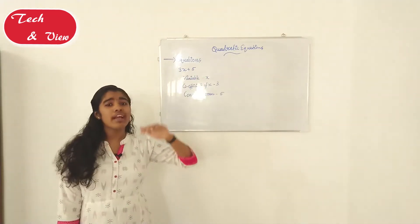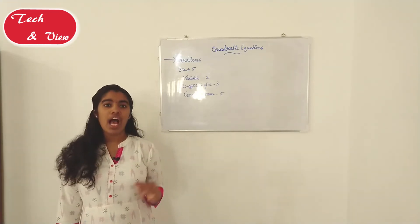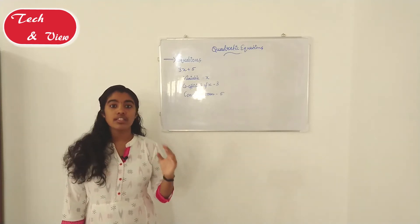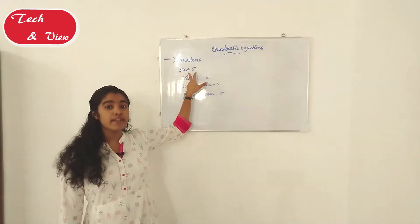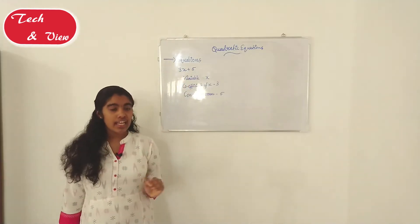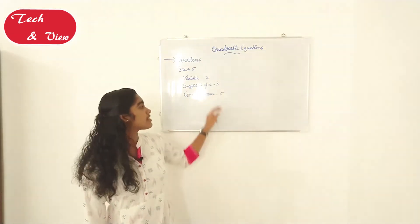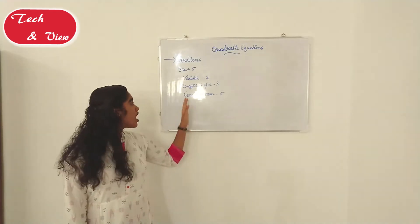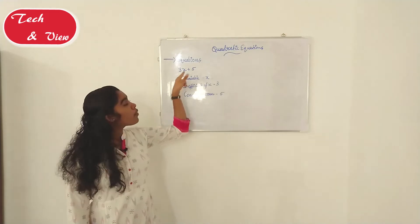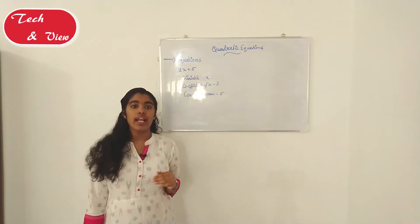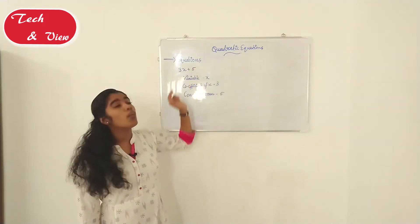What is quadratic equations? We will learn basic things. That's the one that is equations. So this is the polynomial. 3x plus 5 — x is the variable, coefficient of x is 3, constant term is 5. This is the polynomial. Because the highest power is 1.